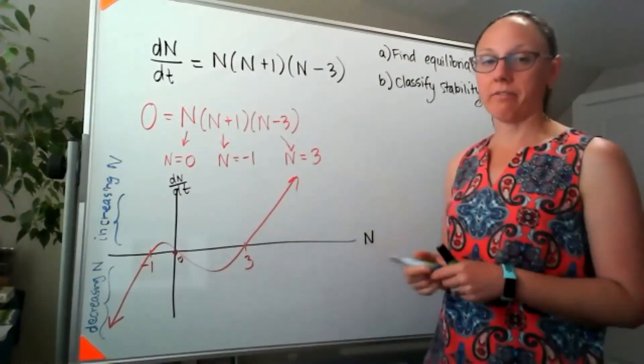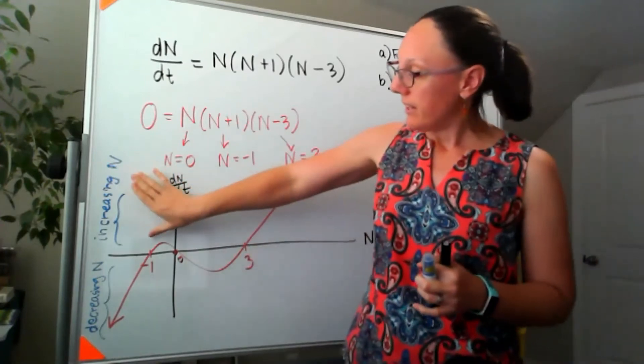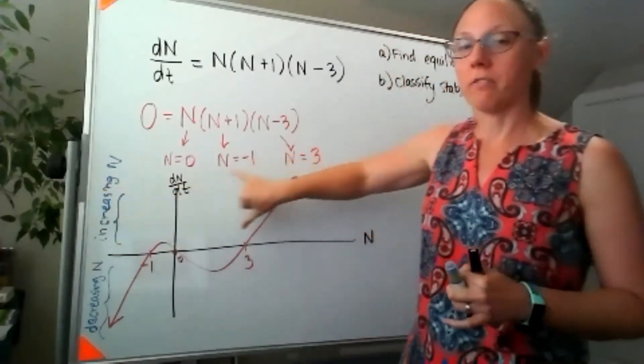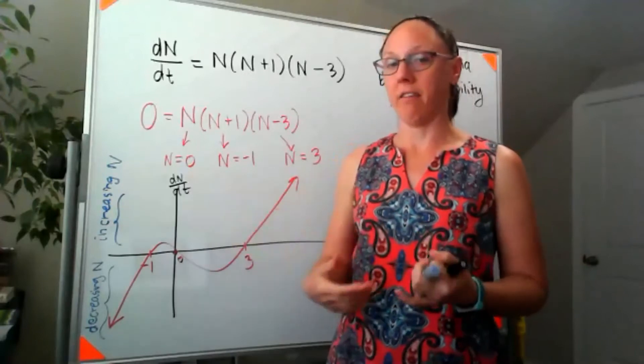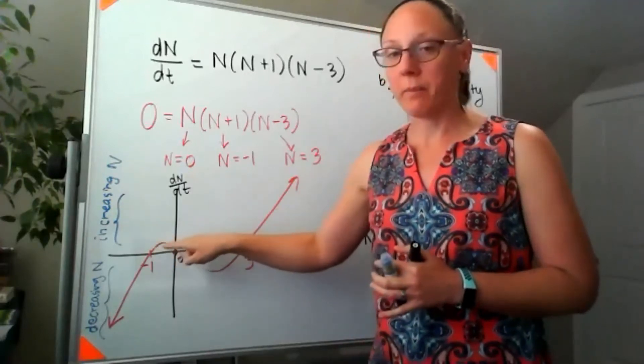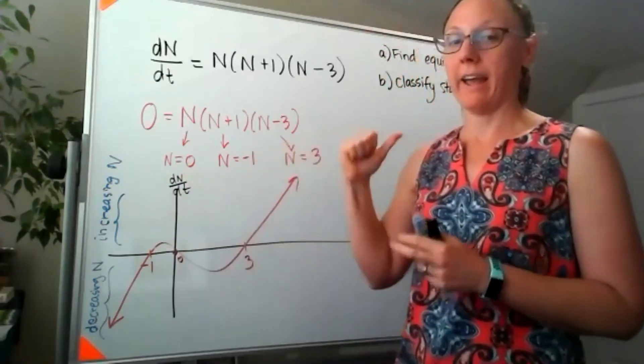Now with our phase diagram, I'm going to take advantage of what we already said. So everywhere that my curve is above the axis, I should be moving towards increasing n values. So in here, that portion of my curve is above the axis, so I should be moving towards bigger n values.